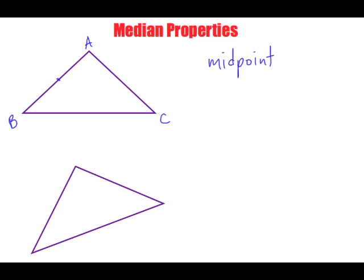If this whole thing from here to here was, let's say, 10 centimeters, the midpoint would be at the five centimeter mark. You're trying to find the midpoint of the side that is opposite from the vertex that you're picking.